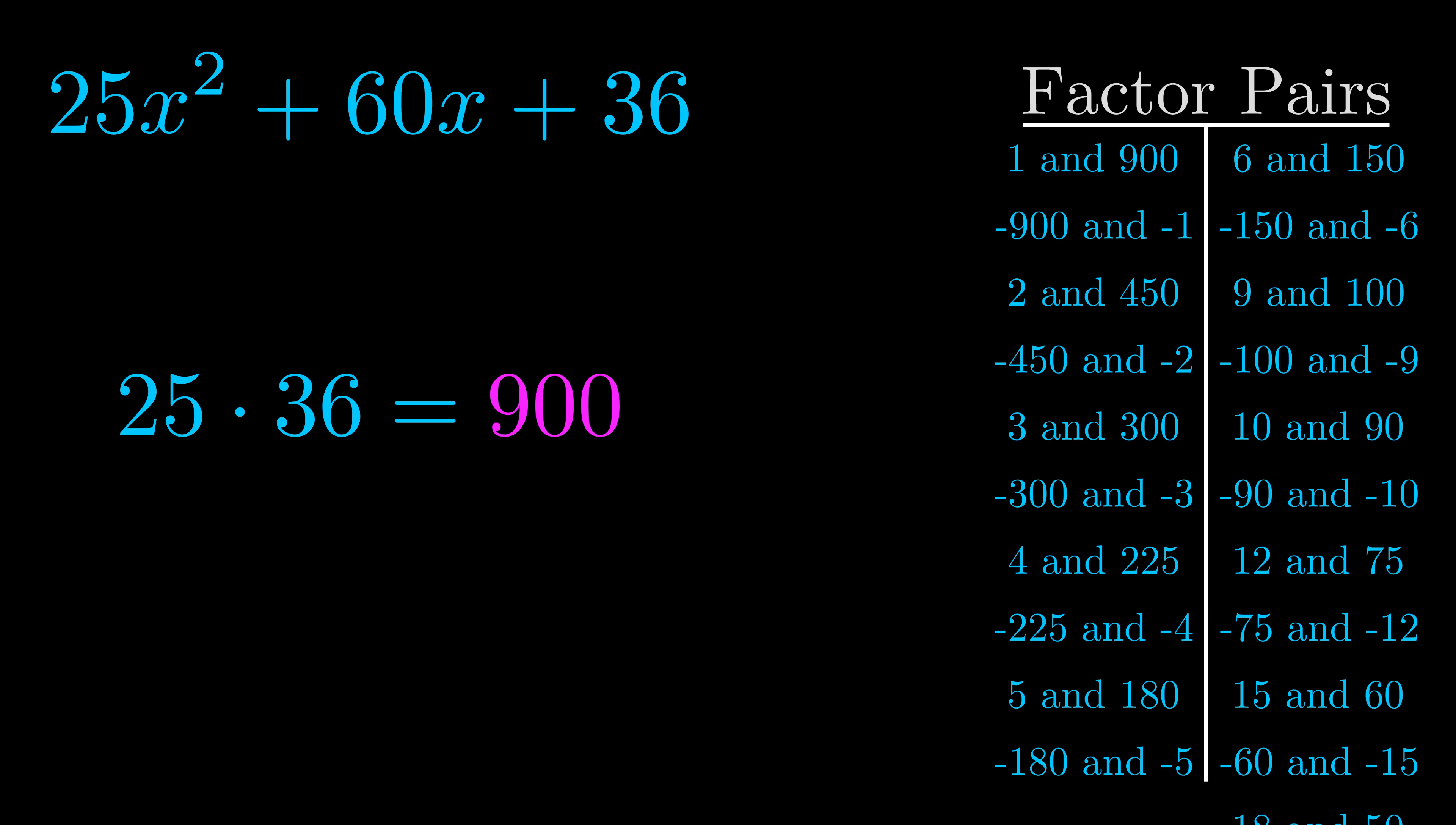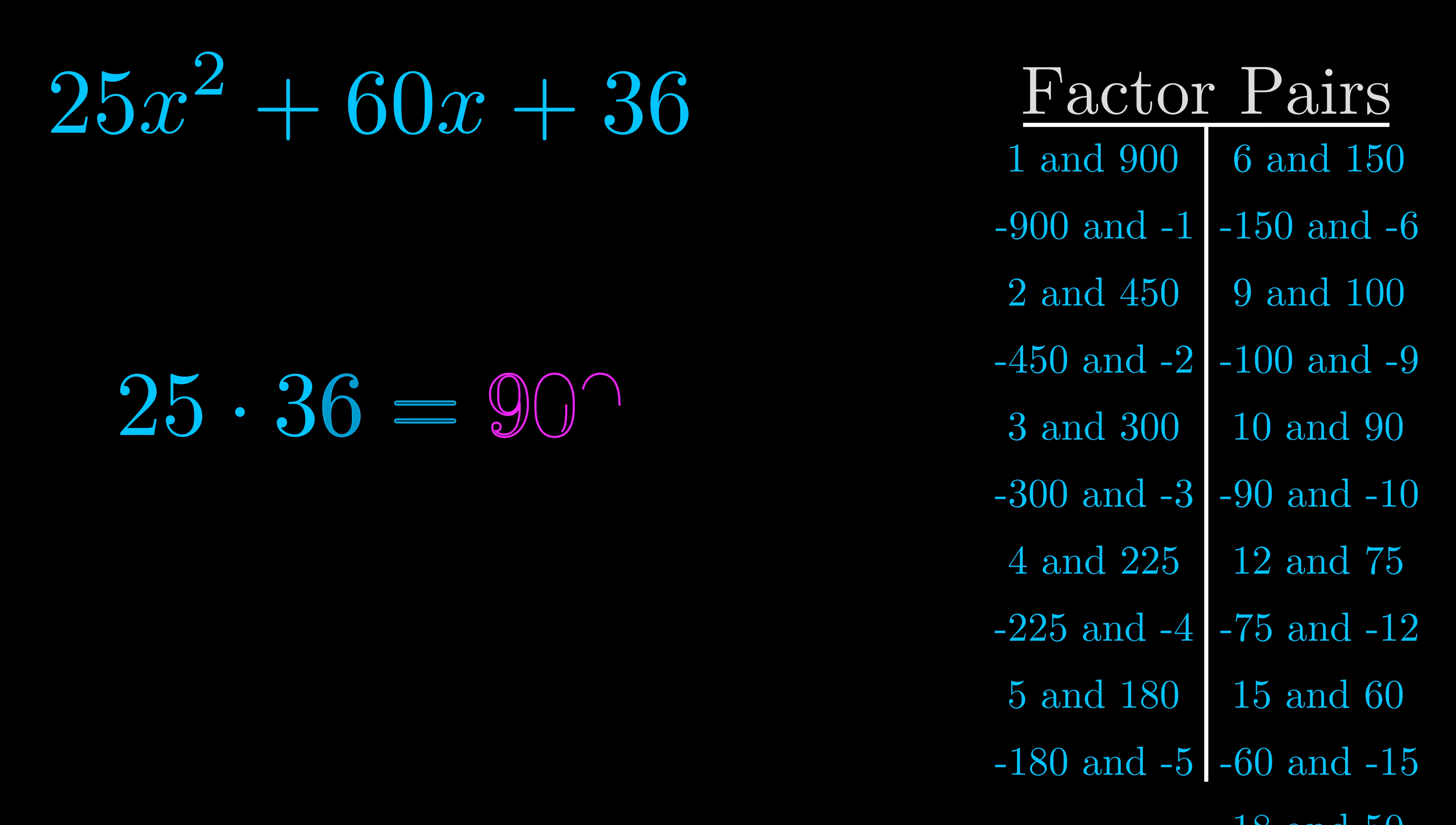Now once you have these factor pairs the goal is to find which of these pairs adds to the b value. The b value is the coefficient on the x term. That's the middle term, the one that we haven't done anything with yet. And really this is the only factor pair that we need.